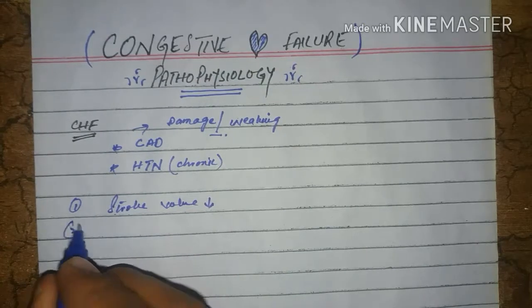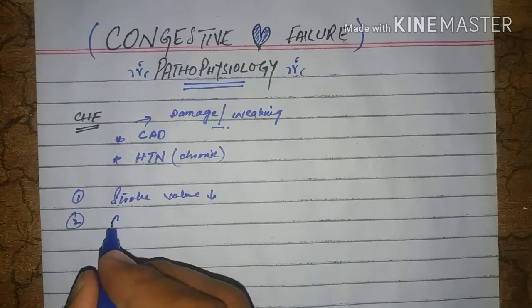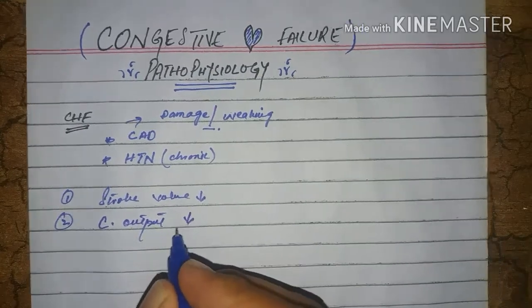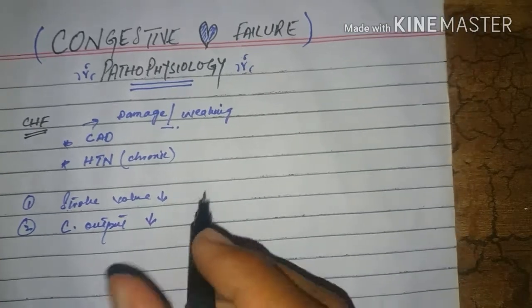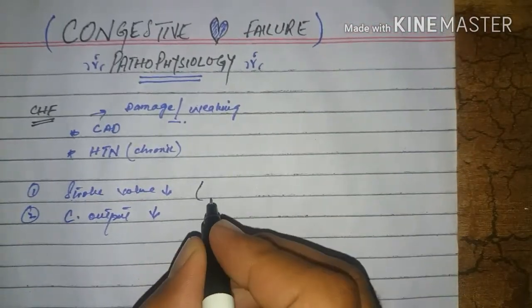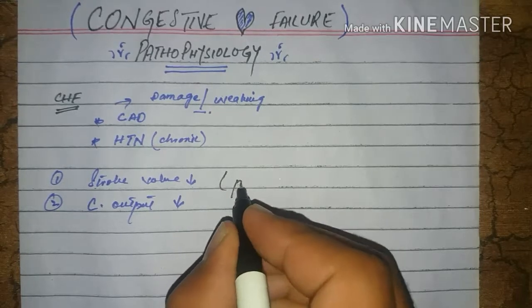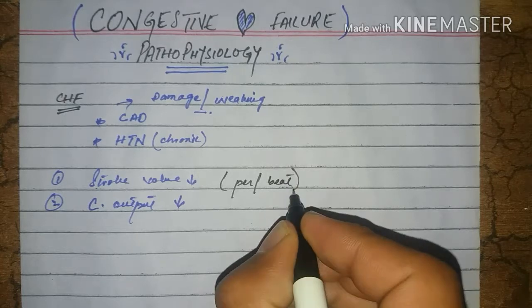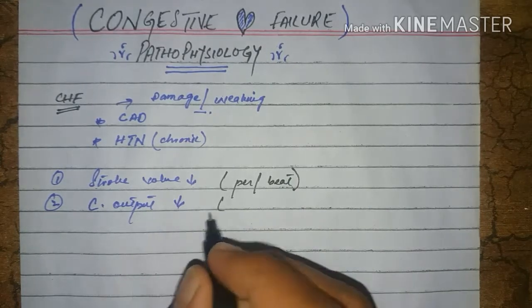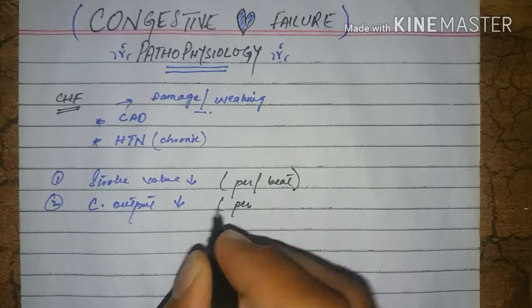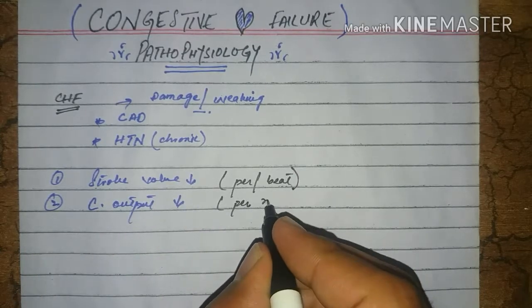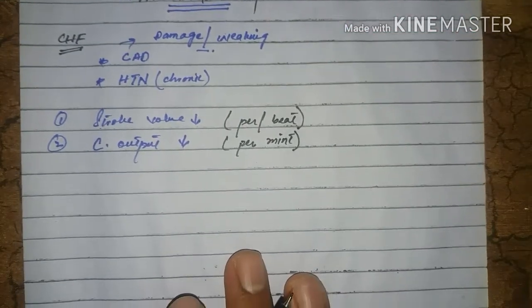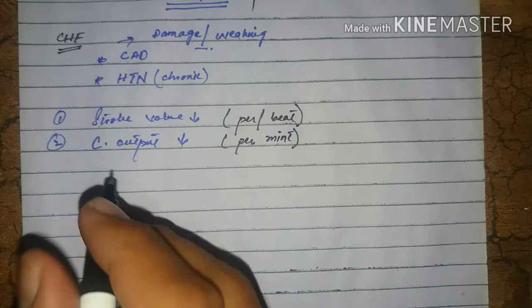What happens in congestive heart failure? Number one, stroke volume decreases, and number two, there is a decrease in cardiac output. Stroke volume is the amount of blood pumped by the heart per beat, and cardiac output is the amount of blood pumped by the heart per minute.